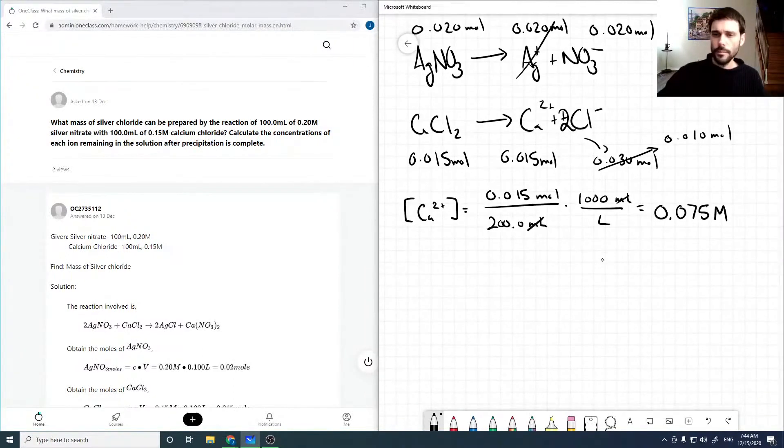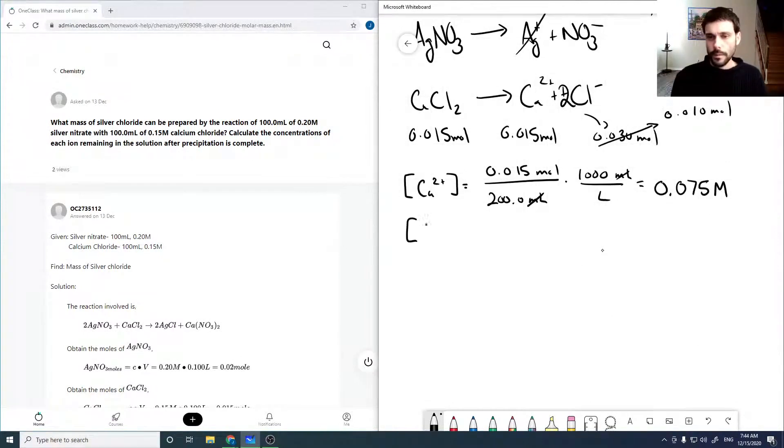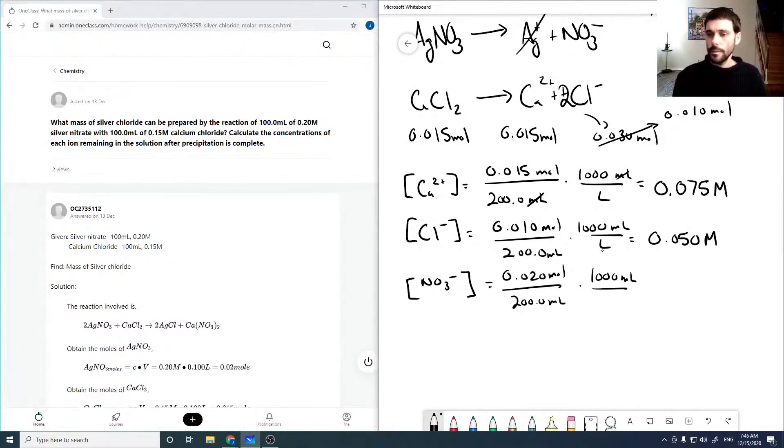So for chlorine, it's 0.010 moles over 200 mL times 1,000 mL per liter, which comes out to be 0.050 molar. And then our concentration of nitrate is 0.020 moles over 200 mL times 1,000 mL per liter. And this comes out to be 0.10 molar.